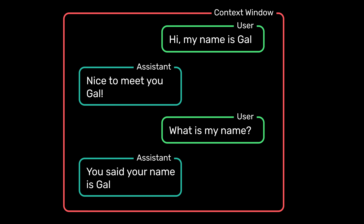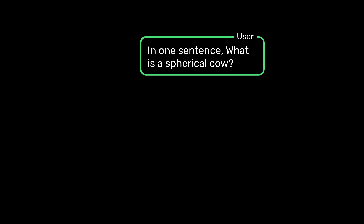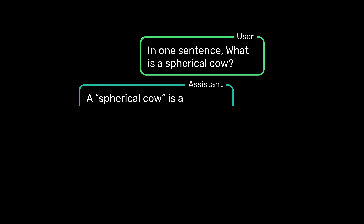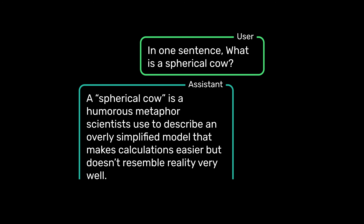The context window still limits the amount of information it can consider at the same time. But those models hold an insane amount of information out of their context window — in their weights, in general knowledge. We can ask them a question about pretty much anything and they would more often than not know the answer. The question becomes: can we make them learn the conversation in the same way they learned their training data?